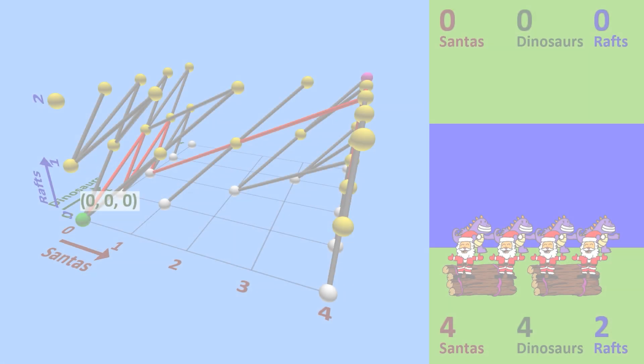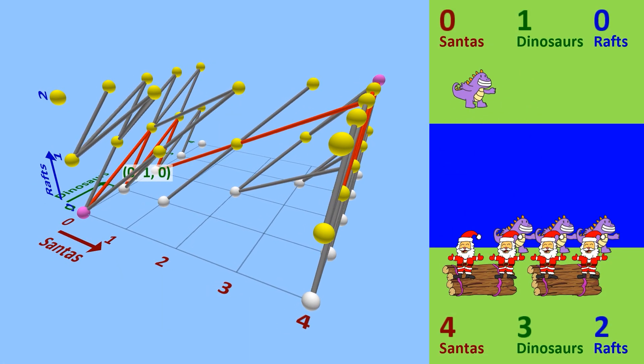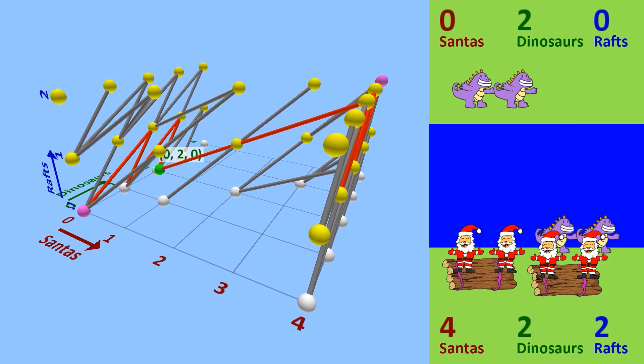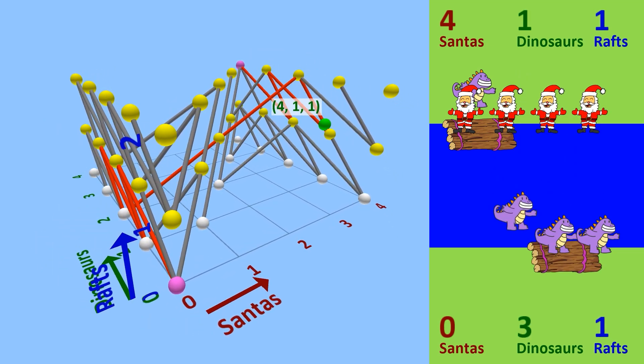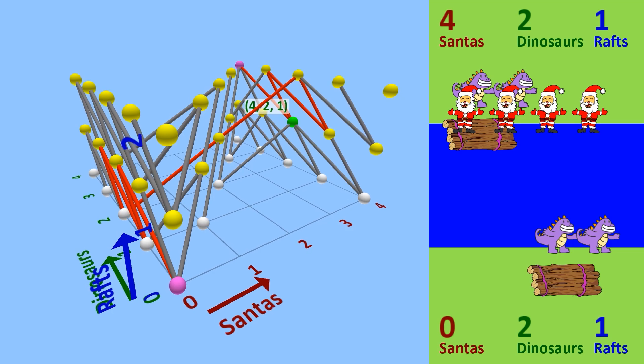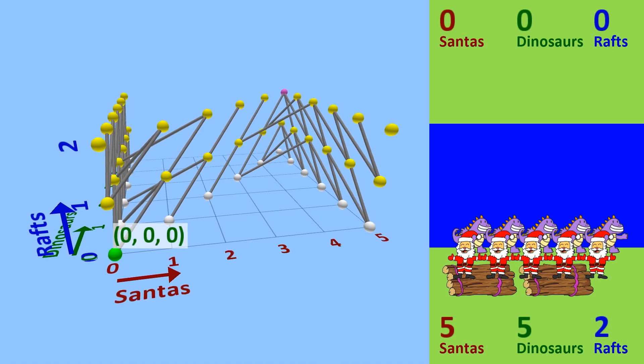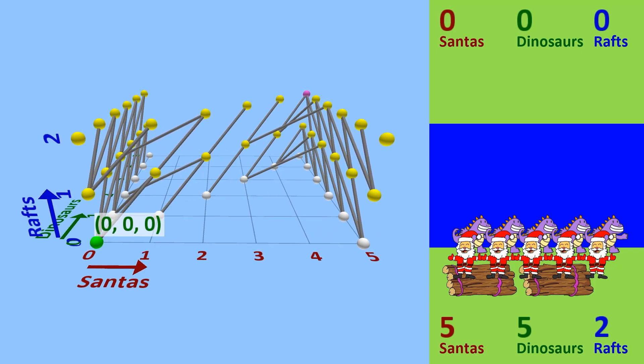But if you allow for two rafts, it suddenly becomes possible again. This is because the four Santas are now able to fully cross the river using the two rafts back to back, meaning they're only separated and vulnerable for a brief moment in the middle. By the way, for this visualization, I stopped drawing the dangerous red vertices because they were cluttering everything up. Expanding further, five Santas and five dinosaurs can't cross the river even with two rafts to help them.